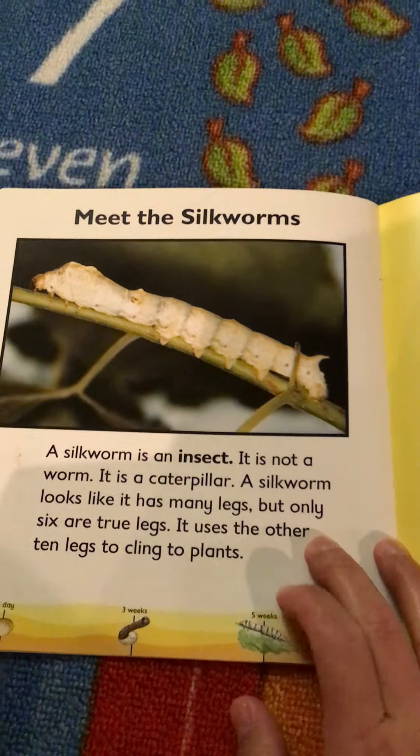The silkworm looks like it has many legs, but only six are true legs. It uses the other ten legs to cling to plants.